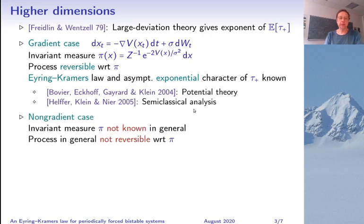Now our system is not gradient, and in the general case much less is known. Though you can prove that an invariant measure exists under some conditions, its explicit form is not known in general and the process is not reversible with respect to the invariant measure.